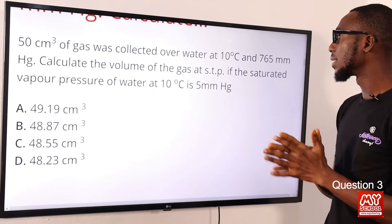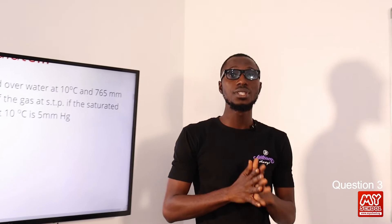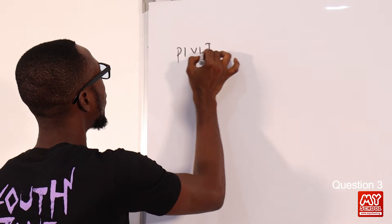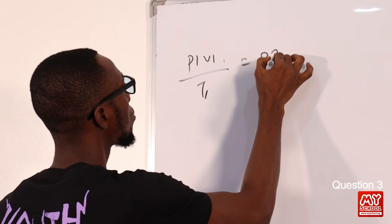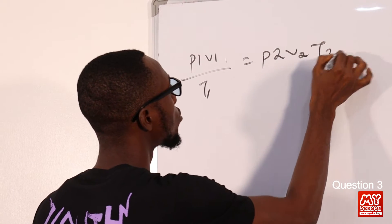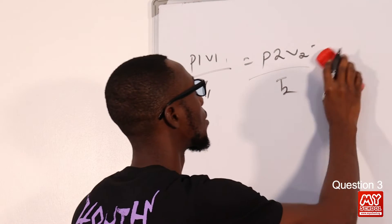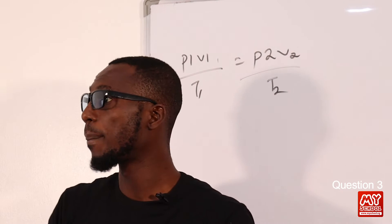We are going to use the general gas equation, which we have as P₁V₁/T₁ = P₂V₂/T₂. So we are looking for V₂.